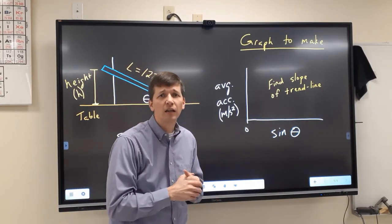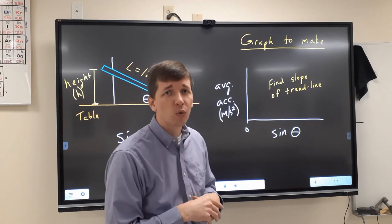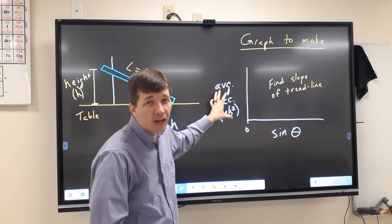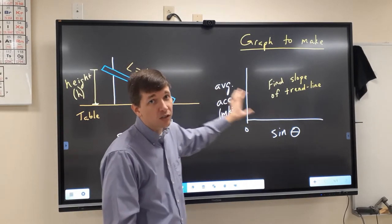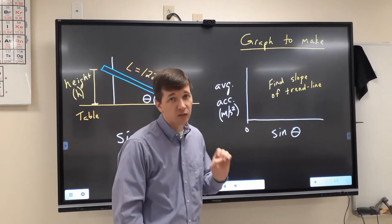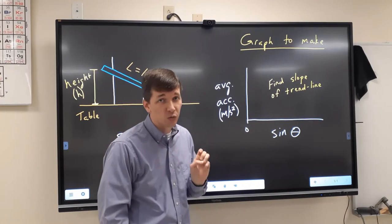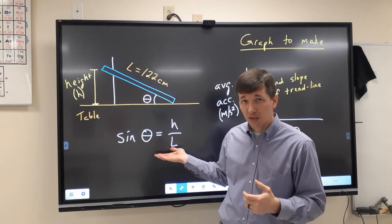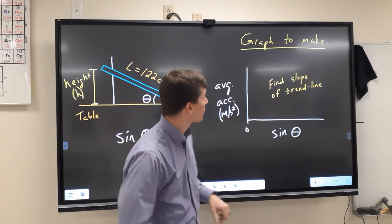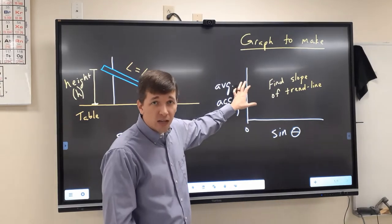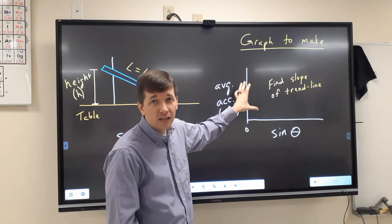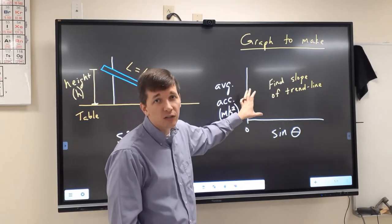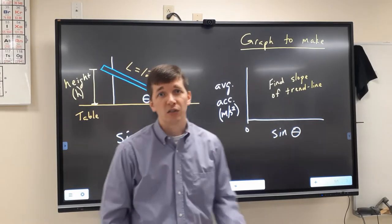When everything's said and done, as part of your analysis on your lab report, as part of answering your questions, you're going to produce a graph. That graph is going to be the average acceleration versus the sine of theta. And again, that's why it's important. You're not solving for actual theta, you want the sine of theta, just whatever this decimal place ends up being when you divide h over L. What you want to do with that graph then is get it plotted out, find the slope of that graph, find the slope of that trend line. And you're going to use that trend line when you're answering some of your questions.